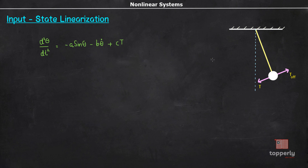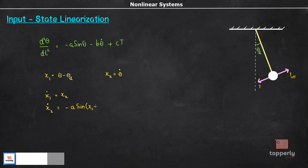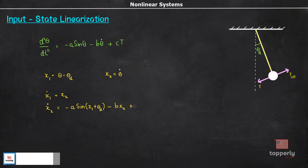Our aim is to design a controller so that the pendulum holds a certain constant angle θ_d. To stabilize the pendulum at θ = θ_d, there needs to be an offset torque applied. Let's convert the system differential equations to state-space form. Instead of using x1 = θ and x2 = θ-dot, let's define x1 = θ - θ_d and x2 = θ-dot. Therefore, the system equations become x1-dot = x2 and x2-dot = -a sin(x1 + θ_d) - bx2 + cτ.